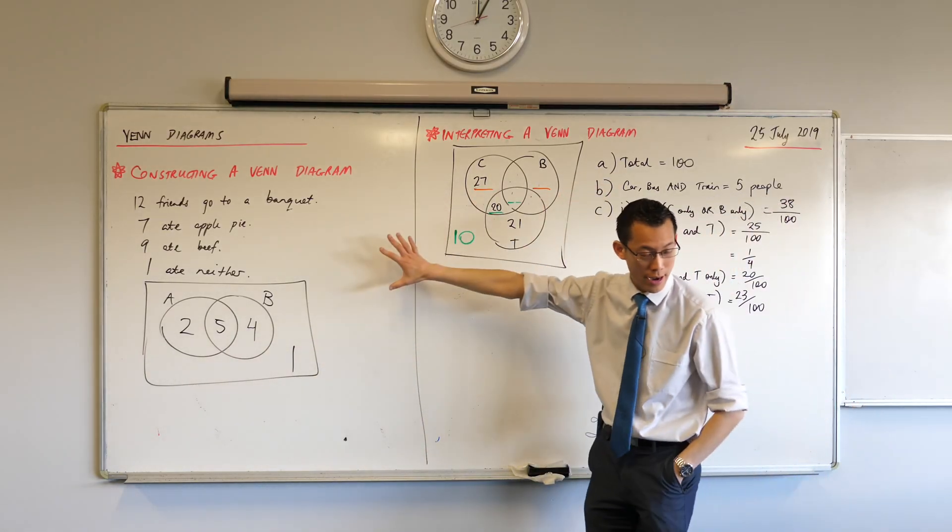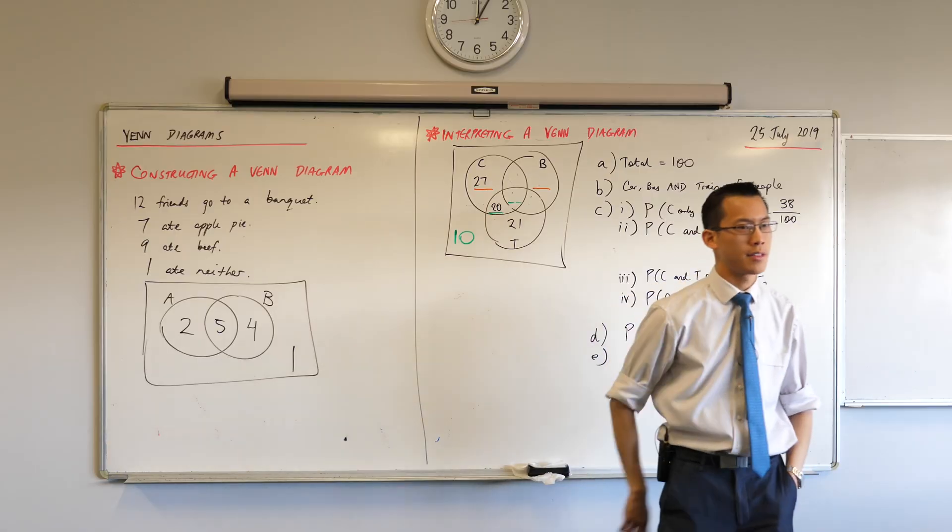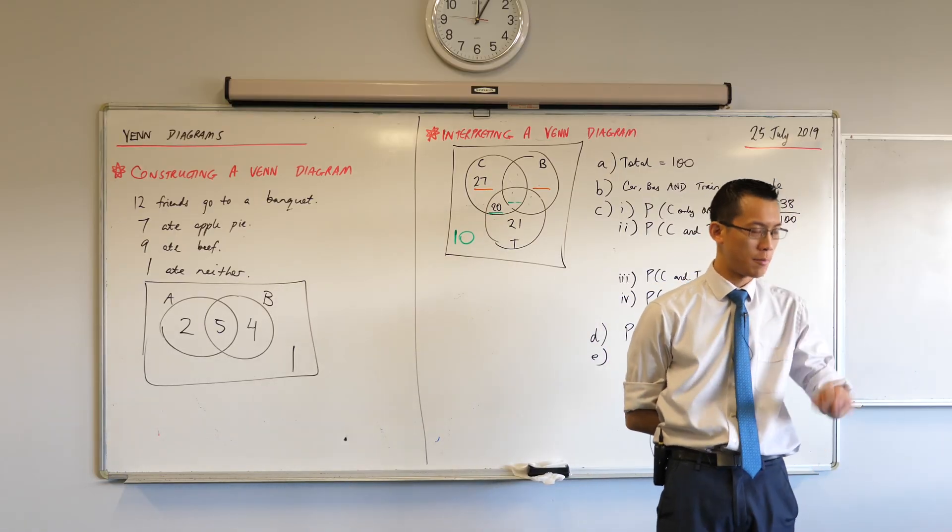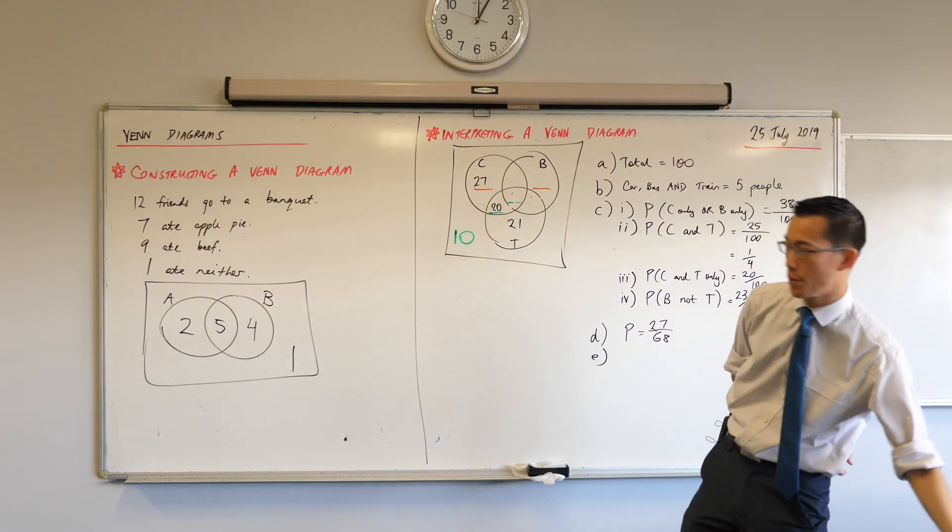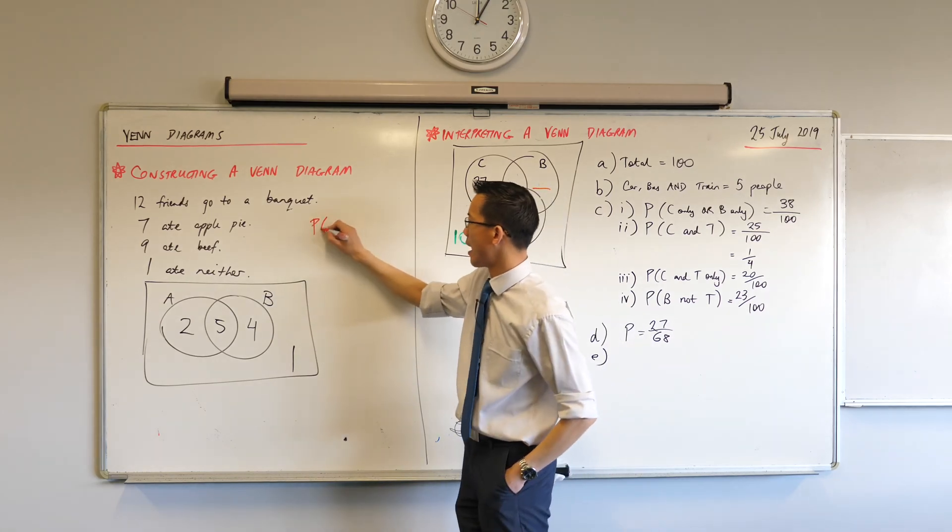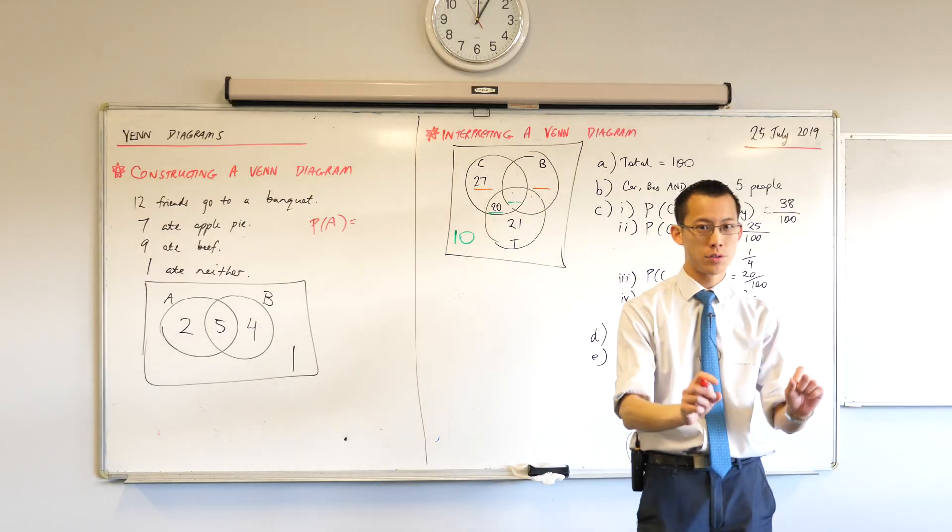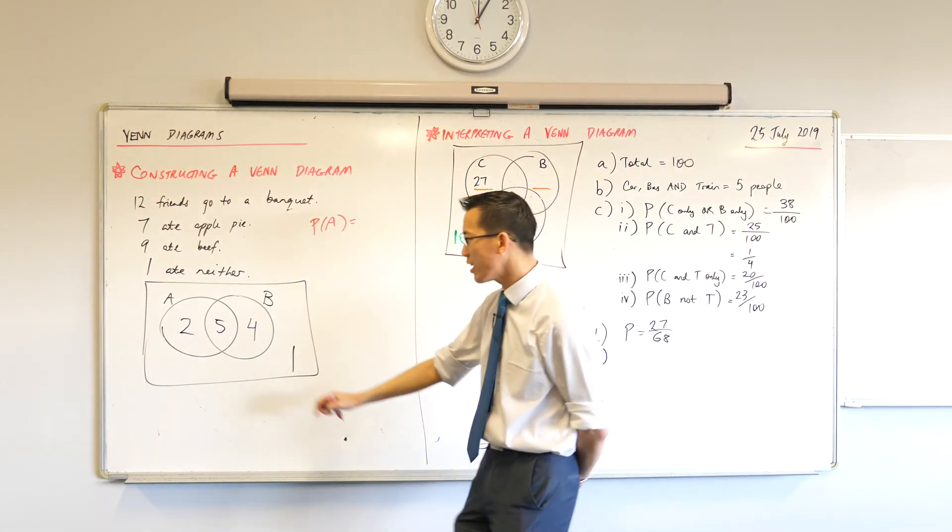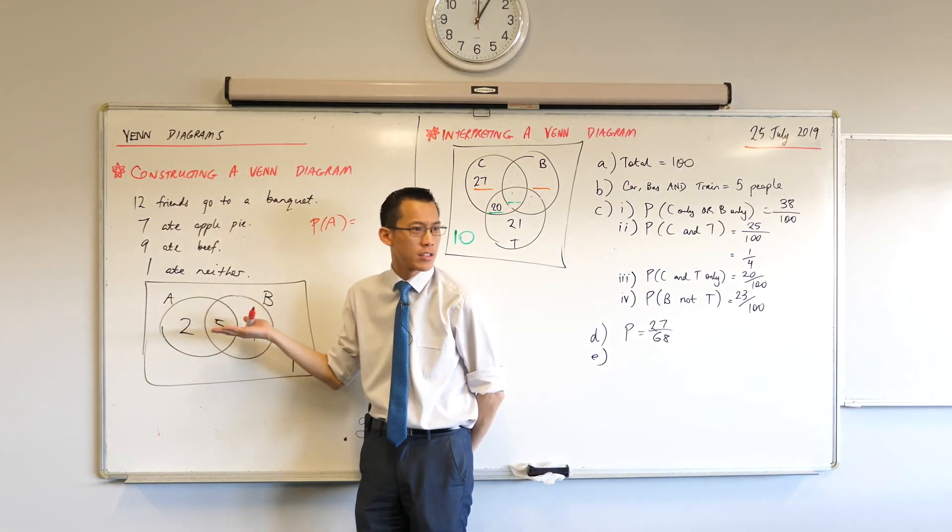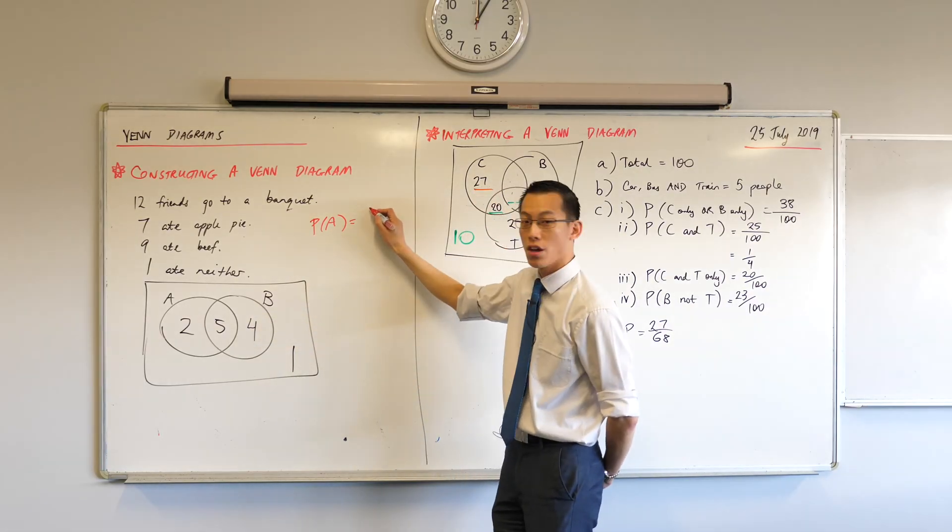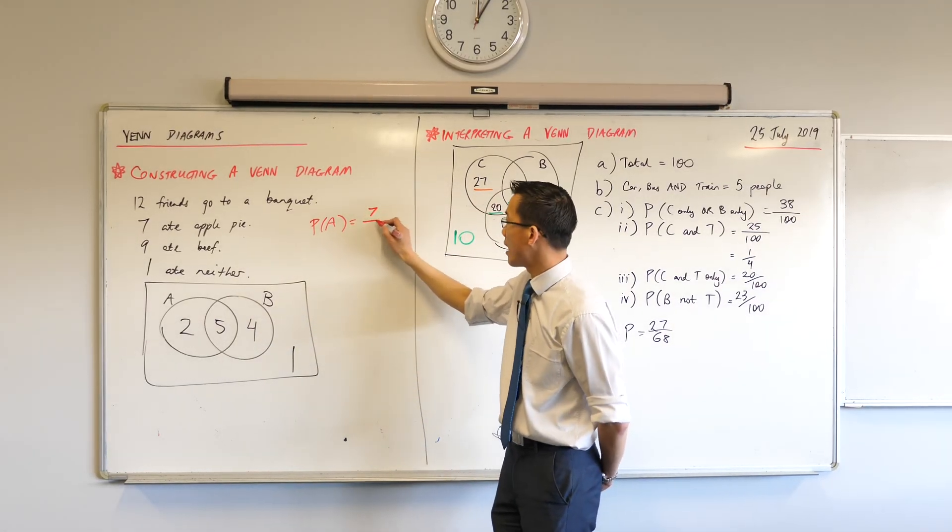If we select any friend at random, what's the probability that they ate apple pie? Full stop. I told you that they ate apple pie. One. Be careful. If I just say apple pie full stop, I can include anyone in this circle, right? Anyone in the circle?